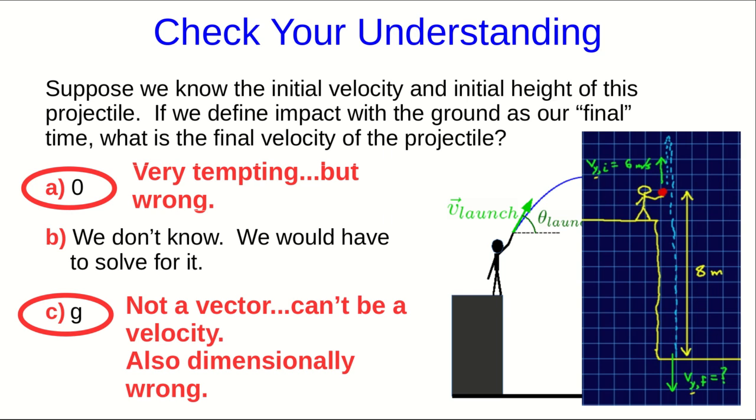C is very, very wrong because G is not a vector, and I've asked for a velocity, and so the answer has to be a vector. And also G is in meters per second squared and a velocity in meters per second, so it definitely can't be C.